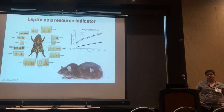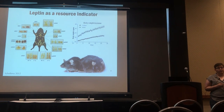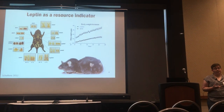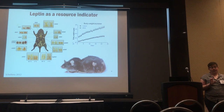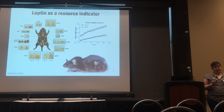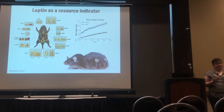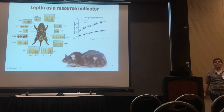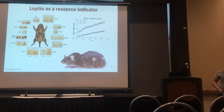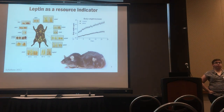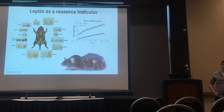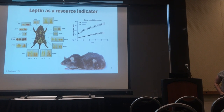Leptin was first discovered in the context of obesity research. There was an OB-OB line of mice. When this peptide was isolated and injected into these OB-OB mice, they suddenly stopped being obese. Everyone went, hurrah! We have solved the obesity epidemic! This was, I believe, 30 years ago now. It did not solve the obesity epidemic.